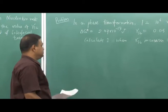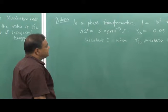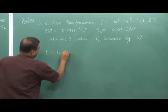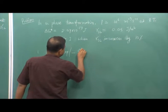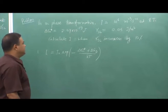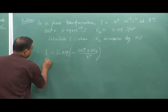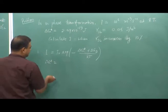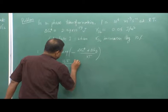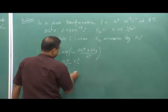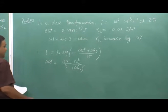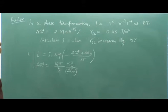Let us revisit the equations needed for this problem. The first equation is I = I₀ · exp(−(ΔG* + ΔGD) / kT), and the second is ΔG* = (16π/3) · γSL³ / ΔGV². These two equations are sufficient to solve this problem.